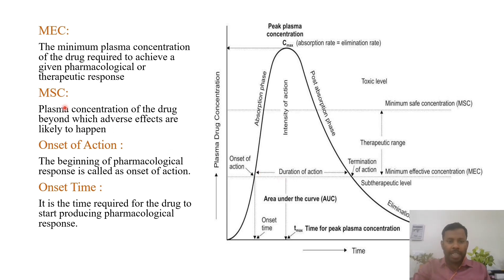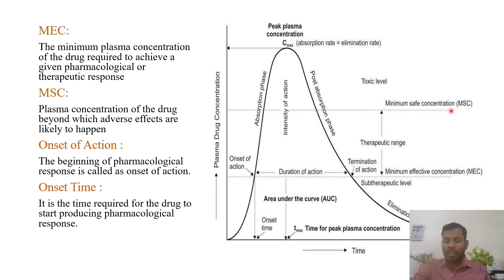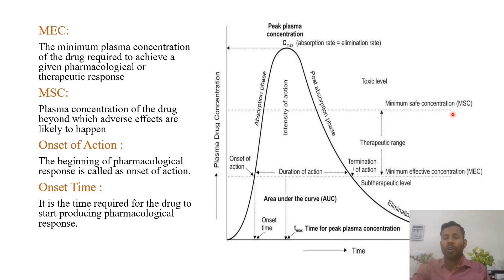Next one is MSC, maximum safe concentration. Up to this concentration, the drug will be safe. Beyond this level, beyond this concentration, drug will show toxic or adverse effects. So this level is called maximum safe concentration — after this, drug is not safe and will show toxic effects.